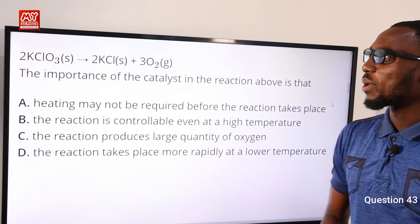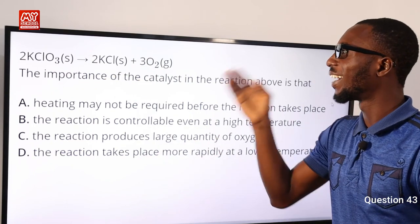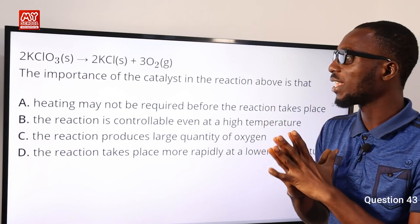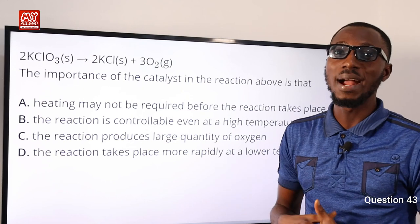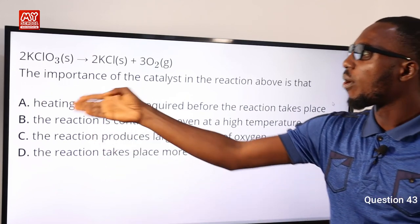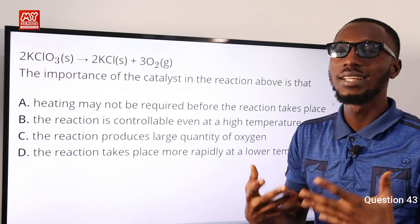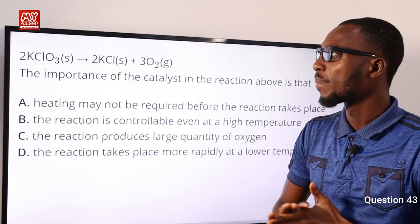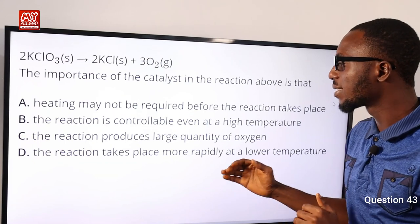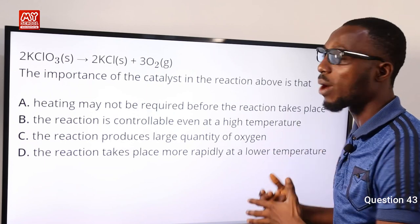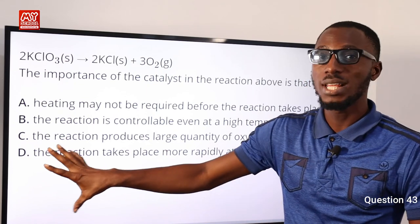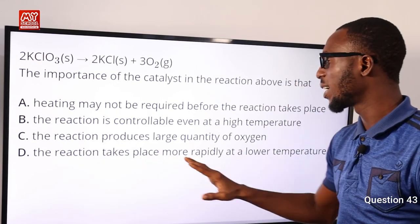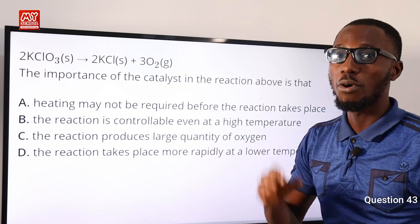Question 43. Potassium chlorate decomposes to give potassium chloride and oxygen. The importance of the manganese dioxide catalyst is that potassium chlorate decomposes slowly releasing oxygen, but the MnO₂ catalyst makes the reaction take place more rapidly at a lower temperature. Option D is correct: the reaction takes place more rapidly at a lower temperature.